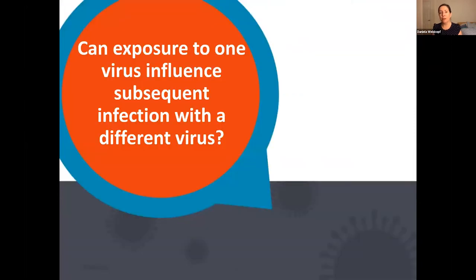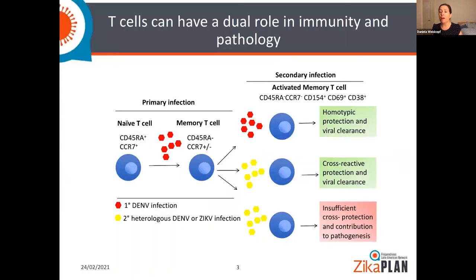Basically, I was wondering: can exposure to one virus influence the subsequent infection with a different virus? That question is based on the hallmark of the adaptive immune system. T cells are part of the adaptive immune system, and the hallmark of the adaptive immune system is that it can remember. Once you have a primary infection and the virus is cleared, you will form memory T cells, and these memory T cells linger and stay with you for years — sometimes a lifetime.